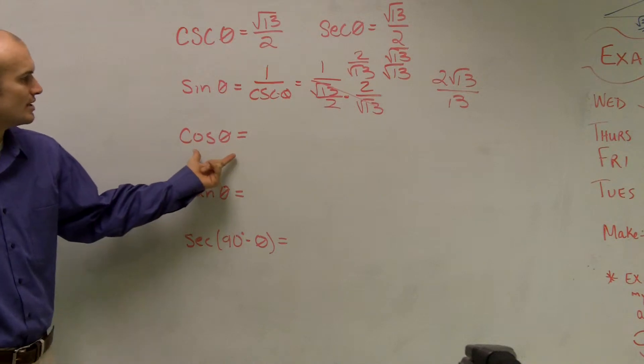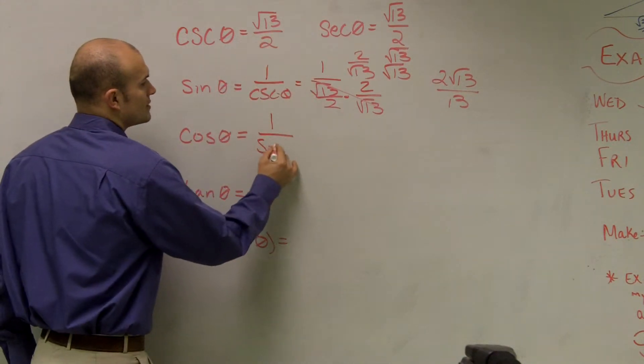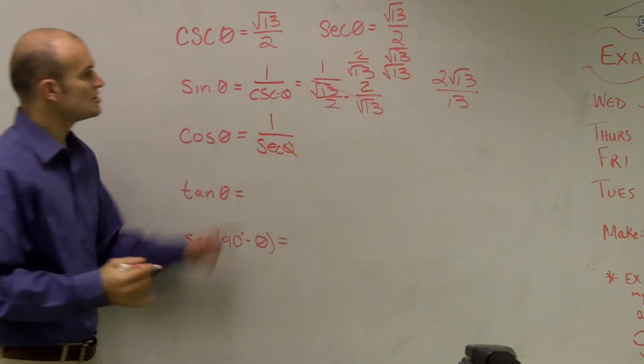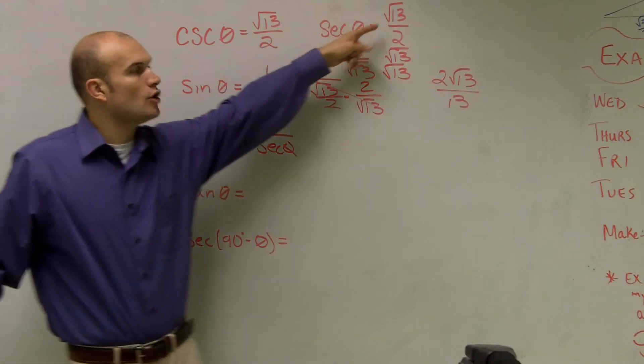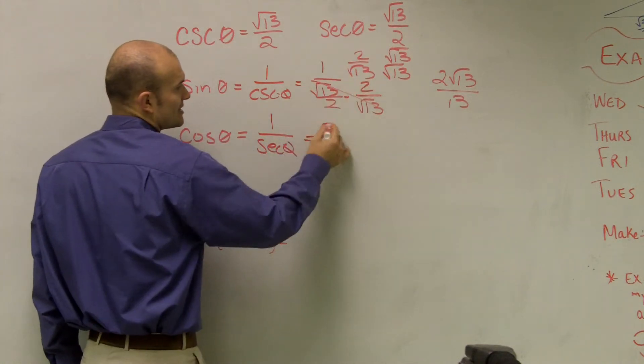Same thing can be done with the cosine. The cosine is 1 over secant of theta. So I'd do the same thing. I'd say 1 over this. Well, I don't need to do the math again. I know that I'm going to get the exact same answer.